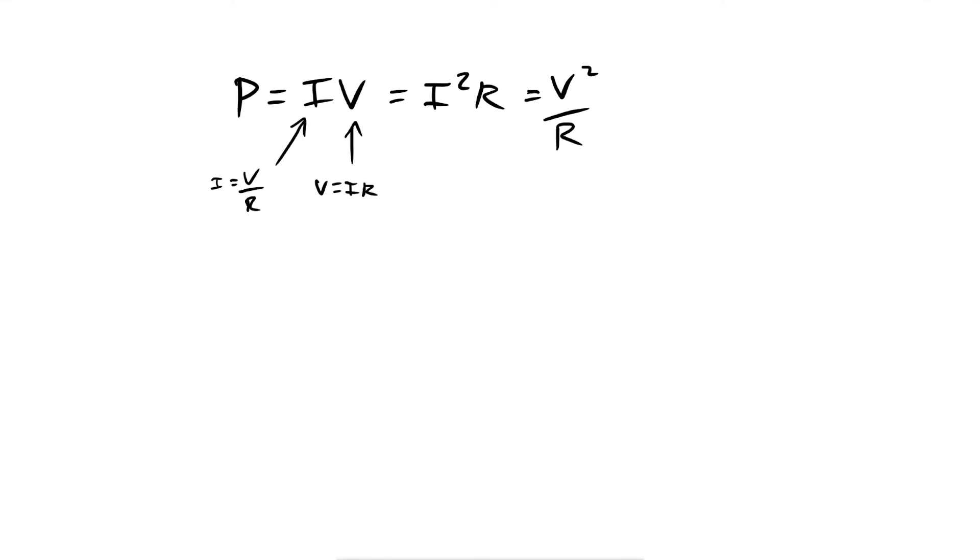So again, you just have to know two of these things in order to find out the third. If you know I and V, you know P. If you know I and R, you can calculate P. If you know V and R, you can also calculate P.